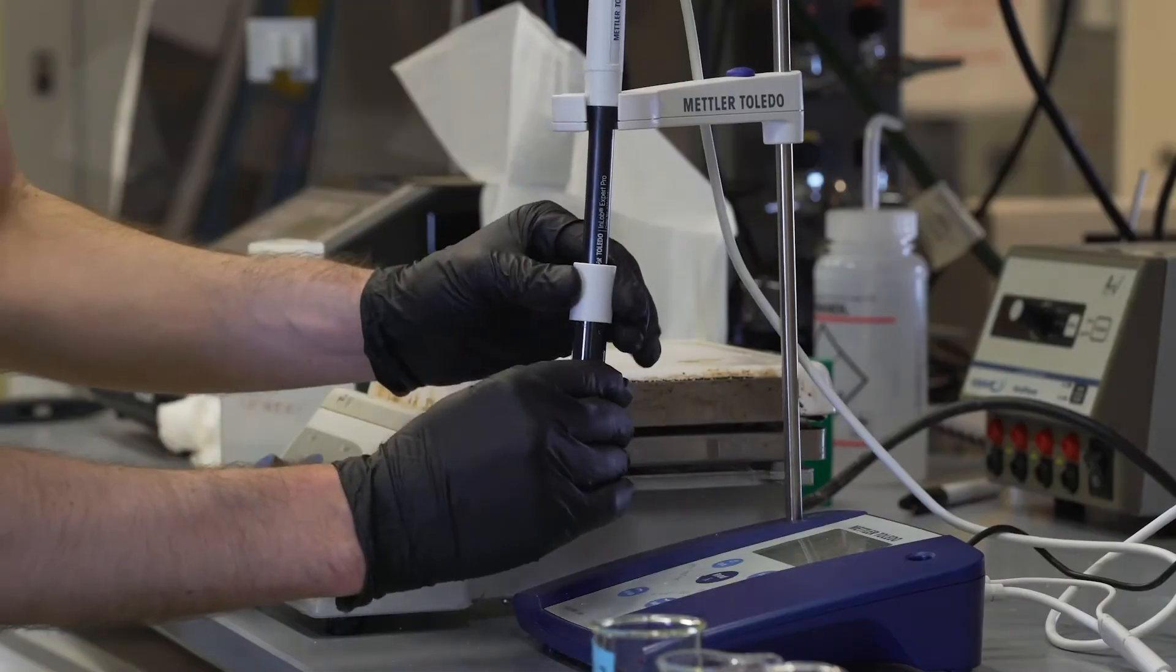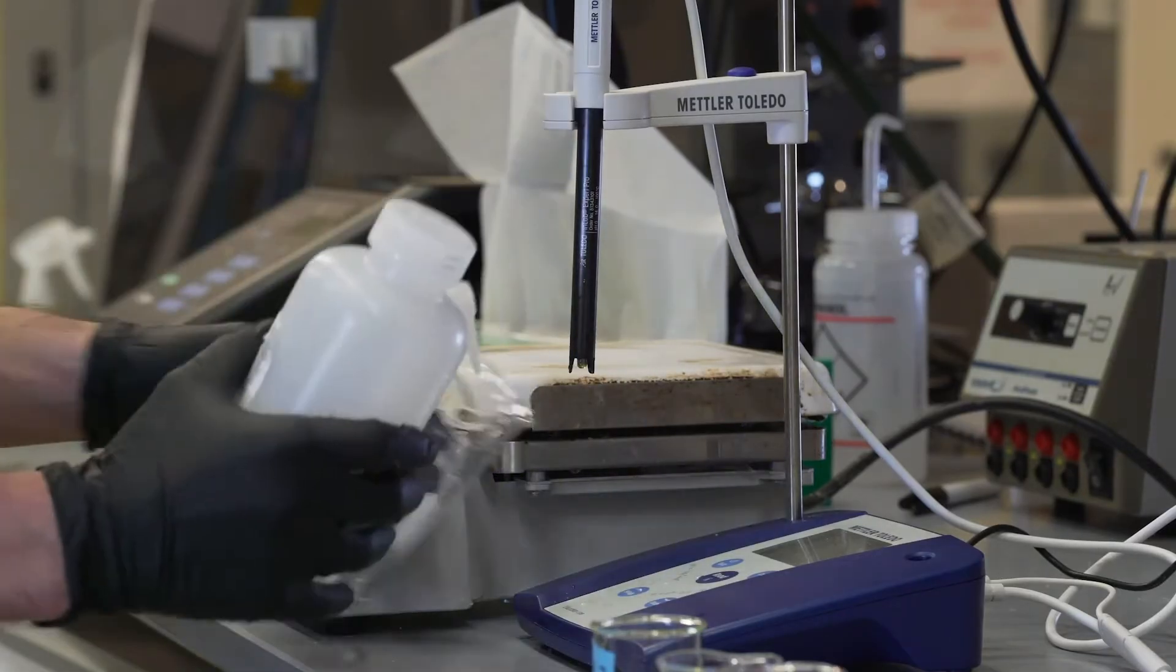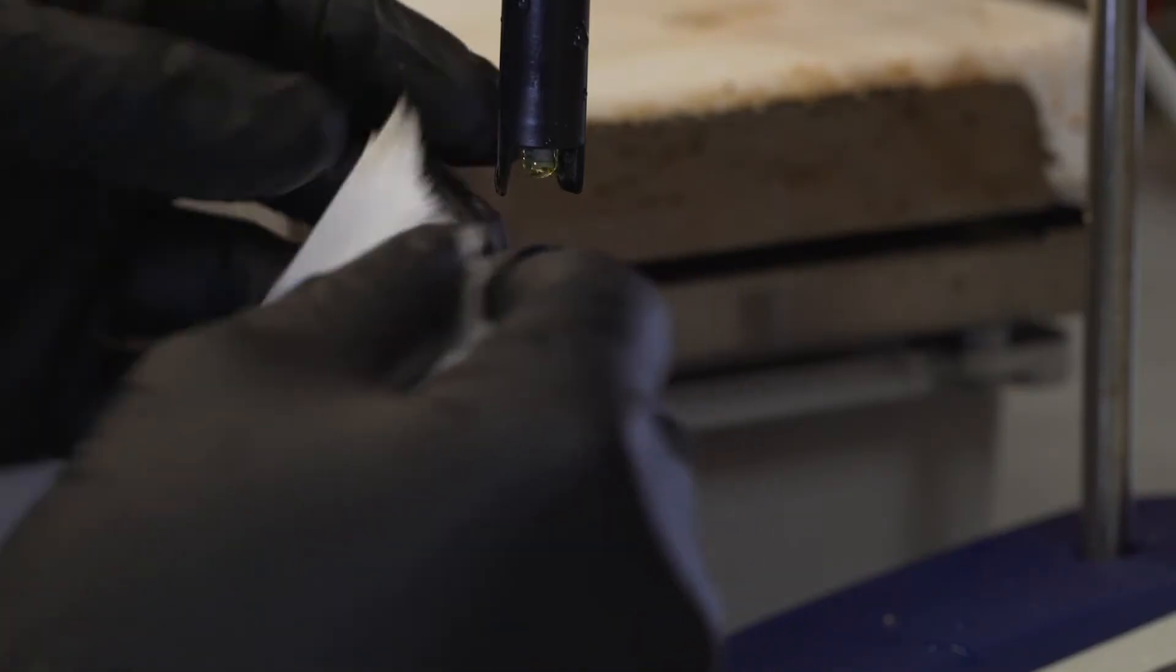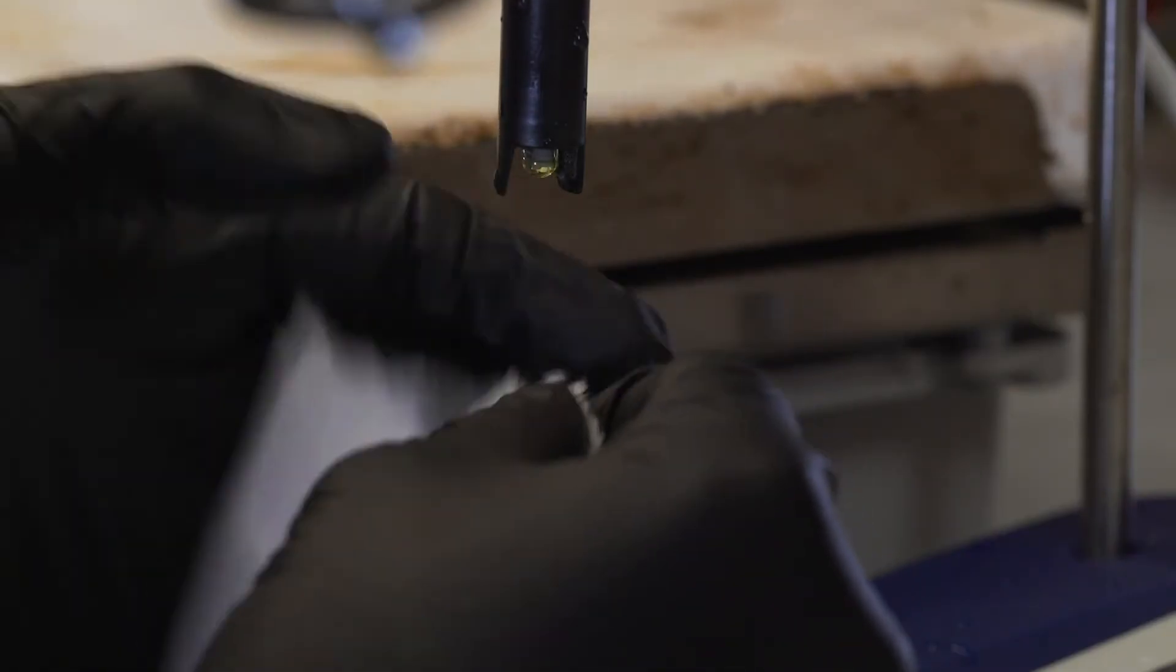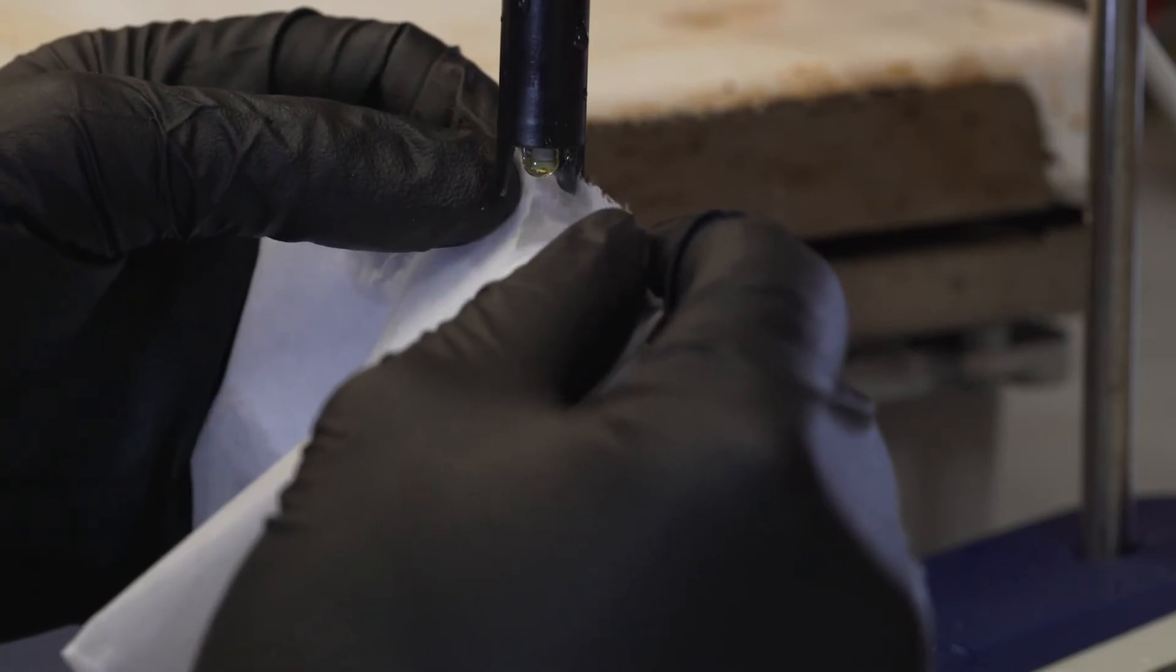Carefully remove the buffer storage tube from the electrode. Place an empty beaker underneath the electrode and rinse it with distilled water. Carefully blot it with a kimwipe, being careful not to touch the glass bulb of the electrode itself. Instead, wick any droplets of water away from it with the wipe.